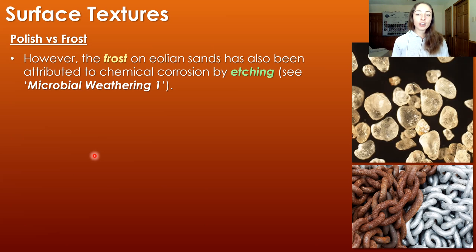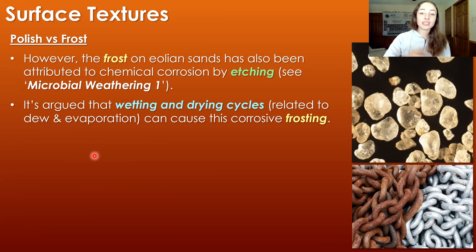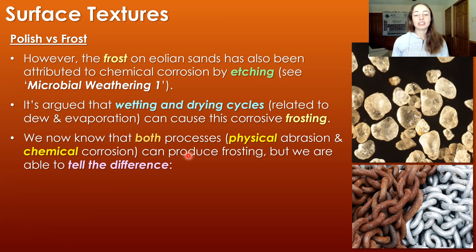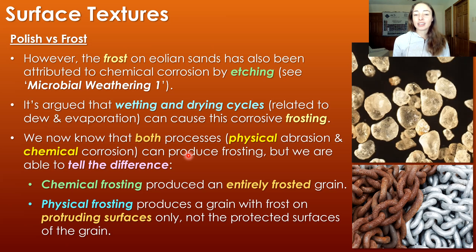Frosted aeolian sand grains have also been observed to occur by chemical corrosion or etching, which is different from the physical sandblasting process. It's argued that wetting and drying cycles related to dew and evaporation could cause corrosive frosting. Now we know that both physical abrasion and chemical corrosion can produce frosting — and we can actually tell the difference: chemical frosting produces an entirely frosted grain around its entire surface area, whereas physical frosting produces frost only on the grain's protruding surfaces because those are the only surfaces getting sandblasted.